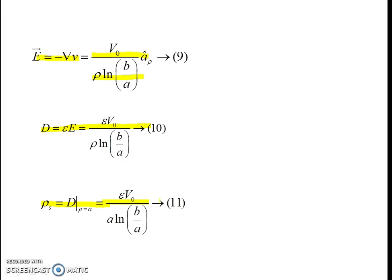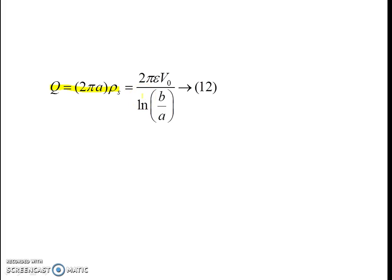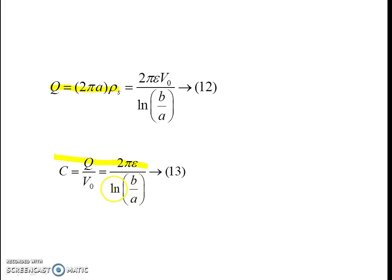Since we have the surface charge density on the inner conductor, we can obtain the total charge. Considering a unit length of the coaxial cable, the charge on the surface of the inner conductor is Q = 2*pi*a * rho_s = 2*pi*epsilon*V0 / log(b/a). From this, the capacitance per unit length is C = Q/V0 = 2*pi*epsilon / log(b/a).